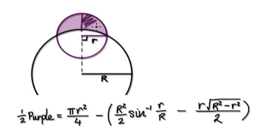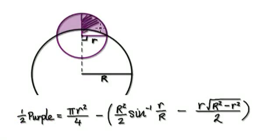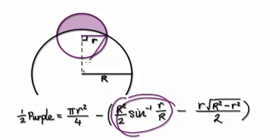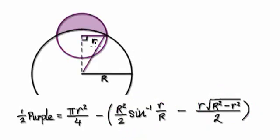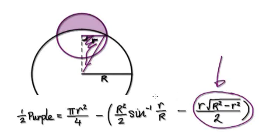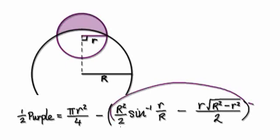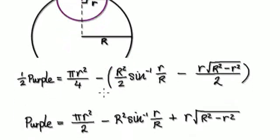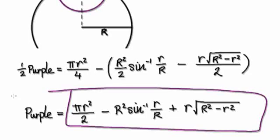So half of the purple area is given by the quarter of the small circle — that's π small r squared divided by 4 — take away the white bits. The white area is the area of the segment minus the area of the triangle. So the half of the purple area is given by that expression, and tidying up gives you the final answer.